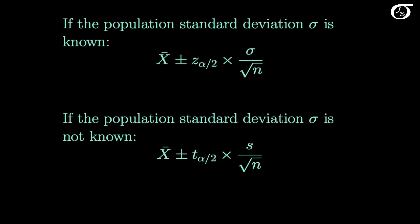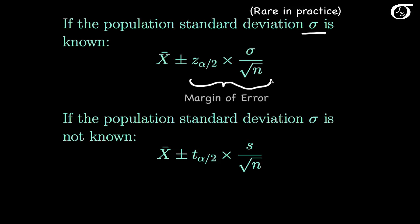If these assumptions are reasonable, then there are two possible paths depending on whether the population standard deviation sigma is known. We've previously been introduced to the notion that if sigma is known, which would be rare in practice, then the confidence interval is made up of the sample mean plus and minus this margin of error. This quantity is sometimes labeled sigma subscript x bar, and that is the true standard deviation of the sampling distribution of x bar.